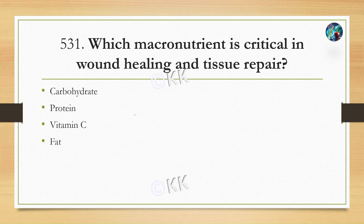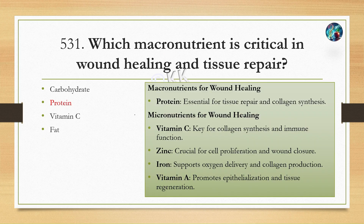Which macronutrient is critical in healing and tissue repair? Option A: carbohydrate, Option B: protein, Option C: vitamin C, Option D: fat. The correct answer is Option B, protein.